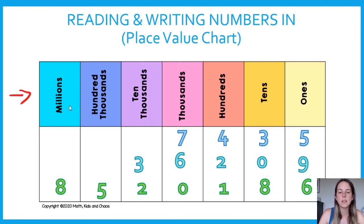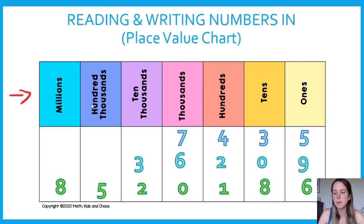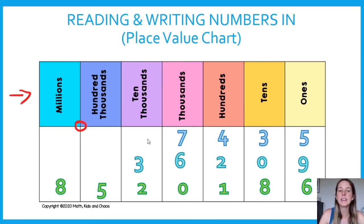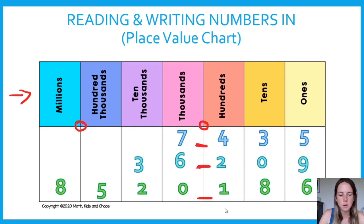Millions, hundred thousands, ten thousands, thousands, hundreds, tens, and ones. If we look at where the thousand separators would be, the first is between the millions and the hundred thousands, then between the thousands and the hundreds. So there will be a space there, a space there, and a space there.